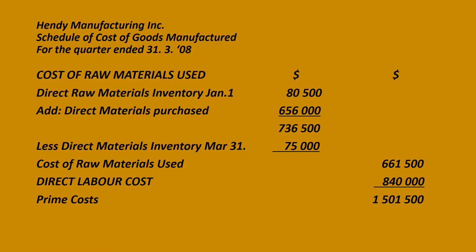The first section we calculate the prime costs. We start with the cost of raw material used, which is equal to the direct materials inventory at the beginning plus purchases, less the materials inventory at the end of the quarter. The next section is the direct labor cost section. We only have one figure, so we just project it across. We don't have any direct expenses, so when we add these two we will get the prime costs.